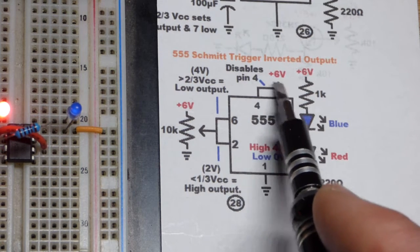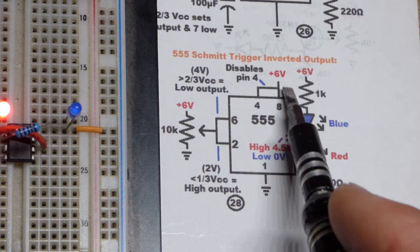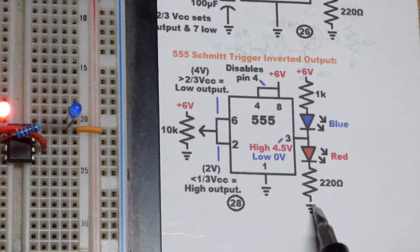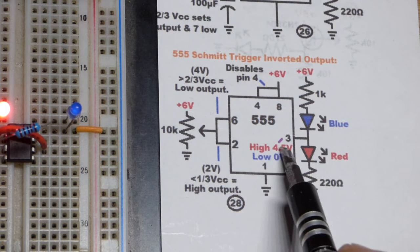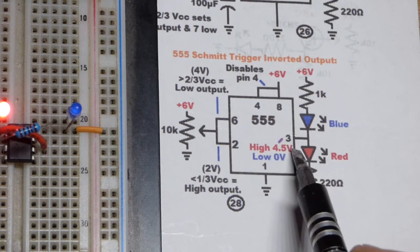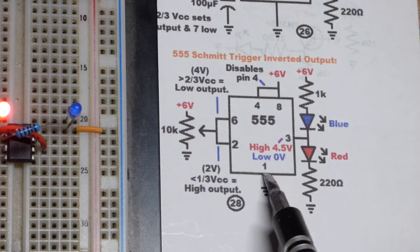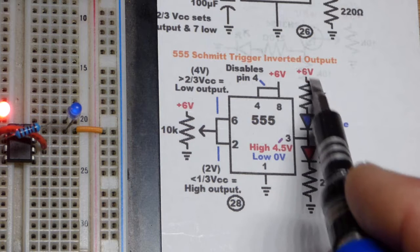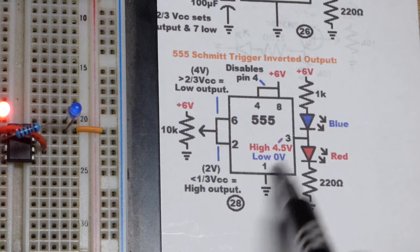It won't do anything now. When the output is high the red LED will light up, right there. That's about four point five volts. You lose some of the positive voltage. When the output is low however, then the blue LED will light up right there.